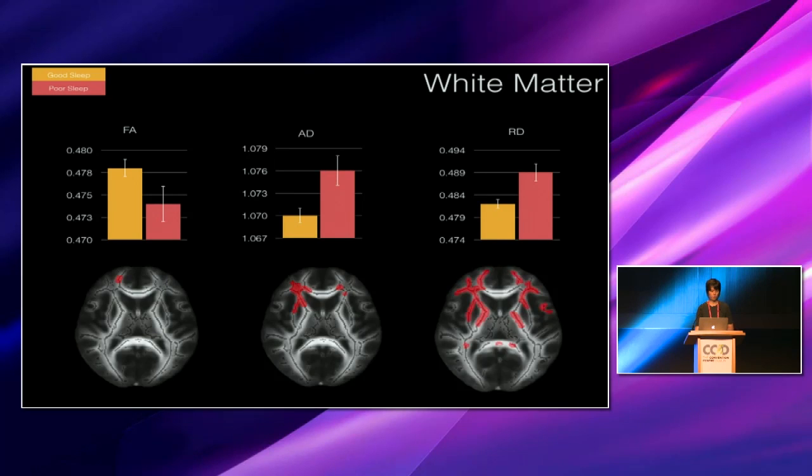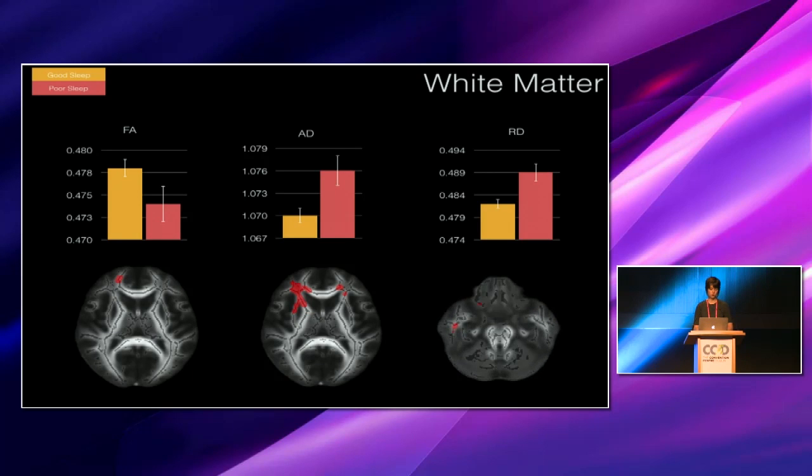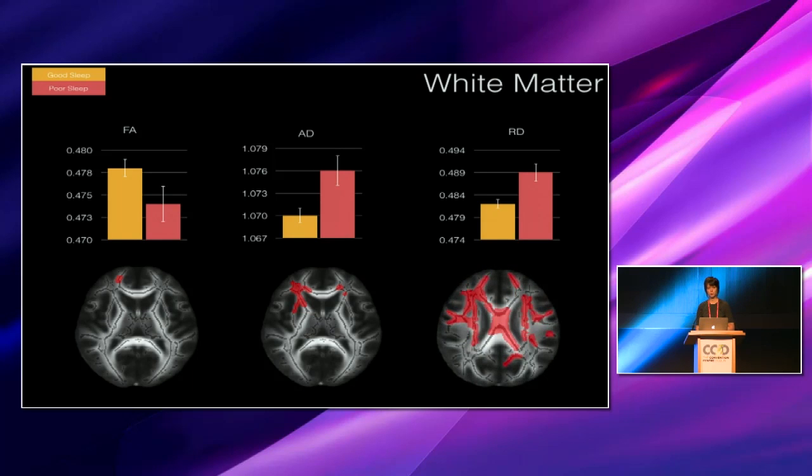And when we performed voxel-wise analysis, then we found significant differences primarily within frontal subcortical tracts, and these were most widespread for radial diffusivity. So this movie moves up through the brain from the bottom to the top, and all the regions which were significantly different between groups are shown in red. And all of those results were after covariate for age, sex, and education.